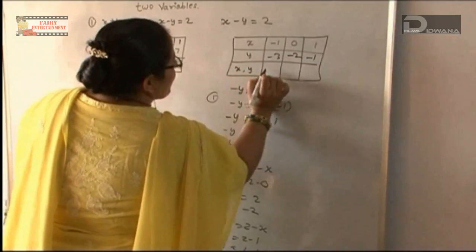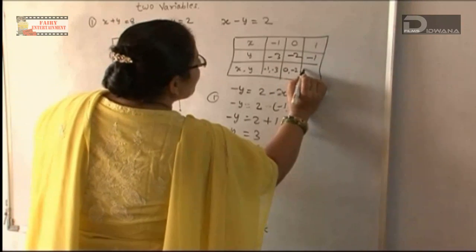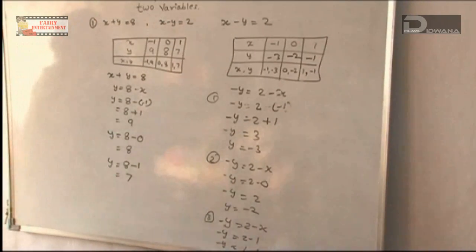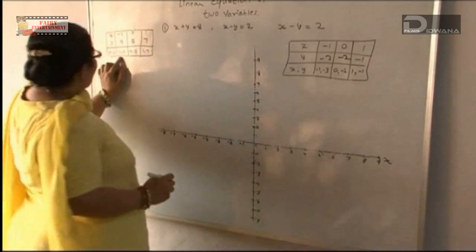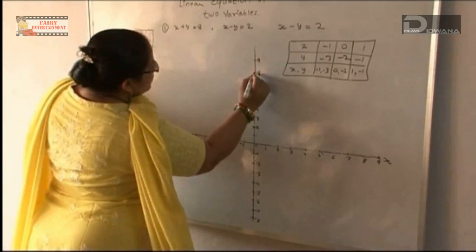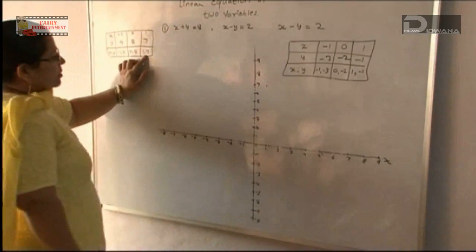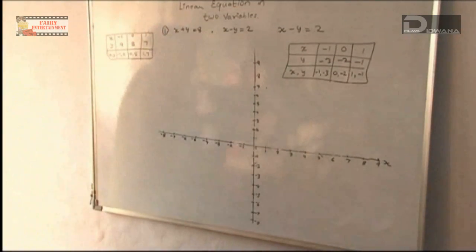The coordinate pairs for Equation 2 are: (minus 1, minus 3), (0, minus 2), and (1, minus 1). Now we will make a graph. For Equation 1, we plot the points: (minus 1, 9), (0, 8), and (1, 7), and draw the line through them.